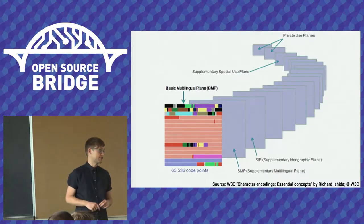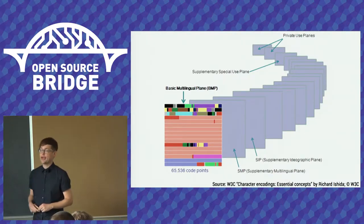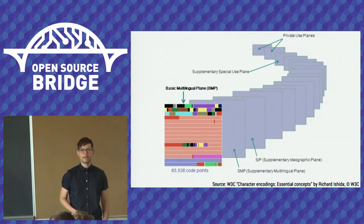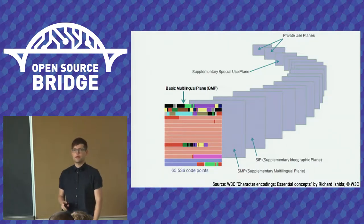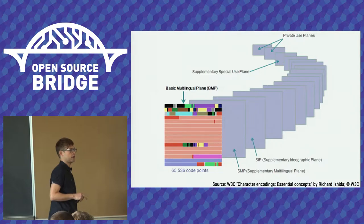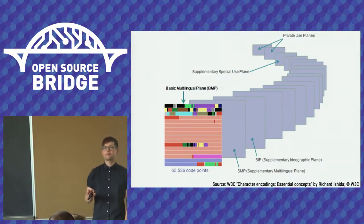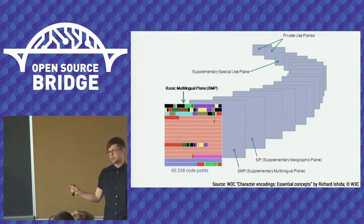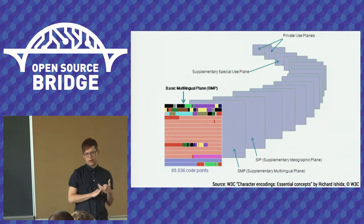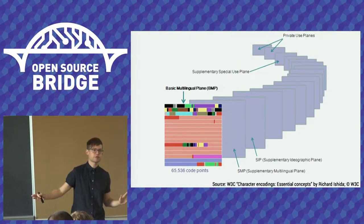A lot of software, even some programming languages, have trouble with non-BMP characters — everything in plane one through 16. The UTF-16 encoding requires one 16-bit code unit for BMP characters, but two 16-bit code units — surrogate pairs — for non-BMP characters. Some systems consider those to be two characters when really they're just half a character each. In UTF-8, all BMP characters are one, two, or three bytes, whereas all characters outside the BMP are four bytes consistently.